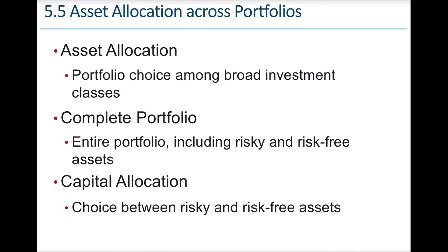In asset allocation, we look at how to put a portfolio together — the broad investment classes between stocks and bonds, large stocks, small stocks, international stocks, and domestic stocks. A complete portfolio includes both risky and risk-free assets together. Capital allocation is the choice between risky and risk-free assets. For example, a portfolio of large-cap stocks, small-cap stocks, long-term bonds, and short-term treasuries makes up the complete portfolio, and you determine the percentage allocation between those capital pools.